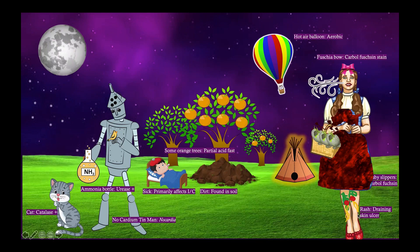So notice on Dorothy she's got a rash. And that's to help you remember the possibility of Nocardia causing a skin infection, which will manifest as a skin ulcer which can drain.